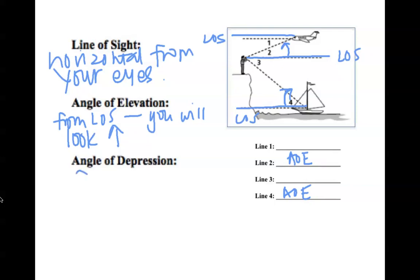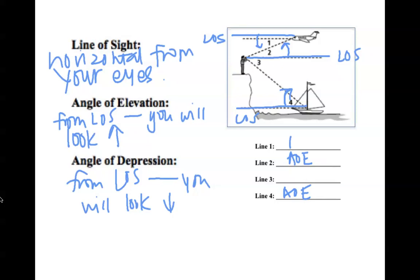Angle of depression. This is from your line of sight — you will look down. From your line of sight from the plane, the only way you can look down to the person is angle 1, so angle 1 would be considered an angle of depression. If you're standing at the person, the person's line of sight is horizontal and he's looking down at the ship — that would also be an angle of depression. So line 3 would be considered angle of depression.